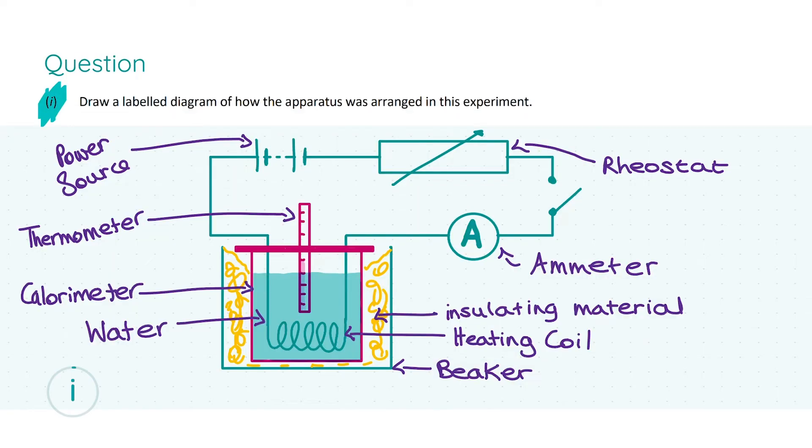So let's actually look at the questions at hand. In part 1, we're asked to draw a labelled diagram, note, labelled. You will lose marks if you don't label your diagram, I think it is, you lose one mark for every omitted label in the diagram for how this apparatus was arranged in this experiment.